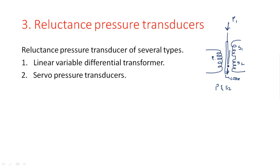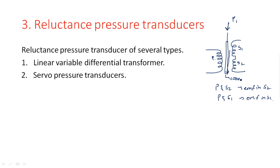Because of this core position, secondary winding 2 will have a lot of EMF generated, because the core comes in between the primary winding and secondary winding 2. If pressure is applied in the reverse direction, the core goes upward and comes in between the primary winding and secondary winding 1, and then EMF is developed in S1.